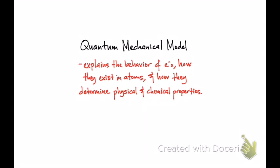The quantum mechanical model is close to perfection when it comes to a model that explains the behavior of electrons. It explains how they exist in atoms and how they determine physical and chemical properties. Since this is introduction to chemistry, we're only going to look at the basic things regarding quantum mechanics.